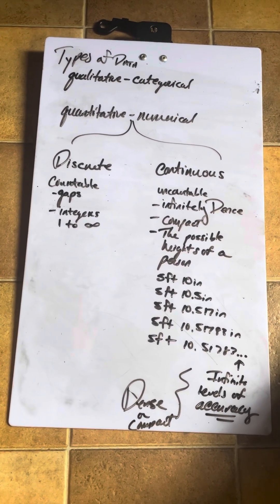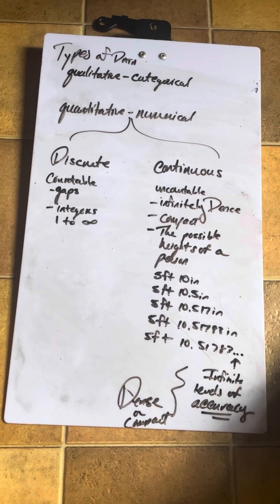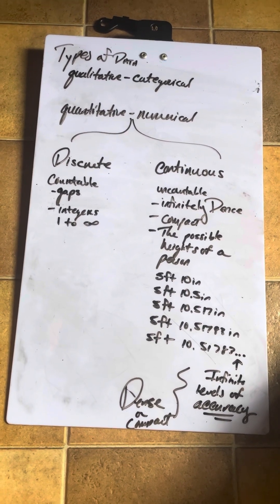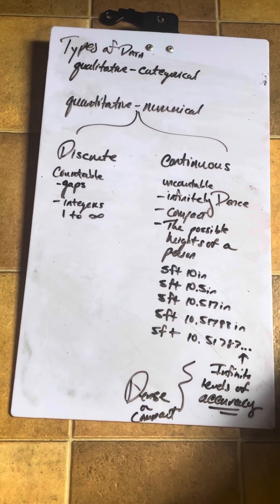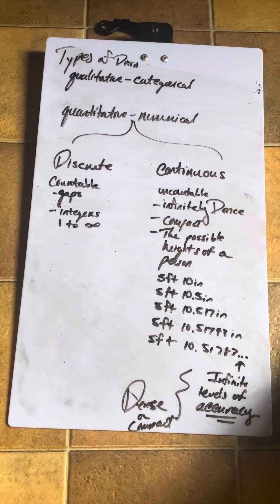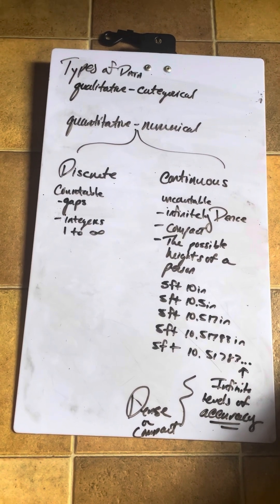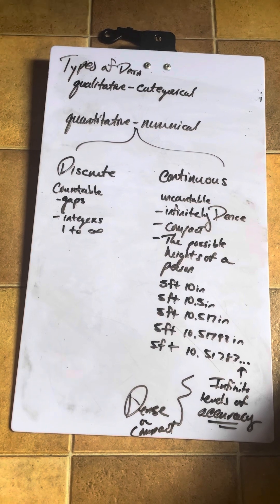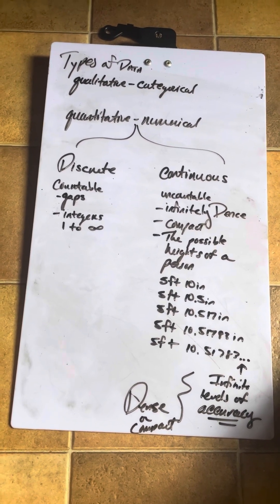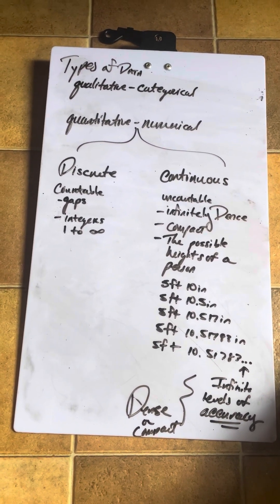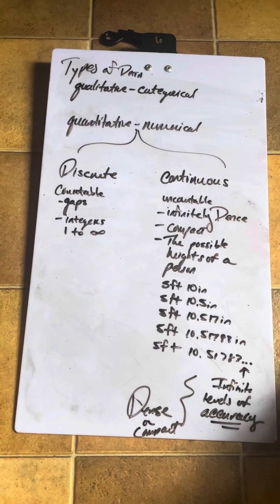The integers go from one to infinity and you can think about it as the number of planets. We can't have half a planet. We can't have a quarter of a planet. It's a whole planet. But we assume that there are infinitely many planets. So that's a discrete set.